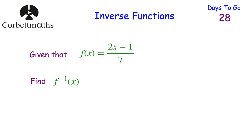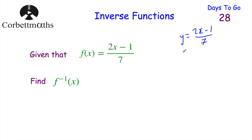Let's look at another question. This time f(x) = (2x − 1)/7, and we want to find the inverse function f⁻¹(x). Press pause now and find that. We start by letting y = (2x − 1)/7. At the minute y is the subject; let's rearrange to make x the subject.